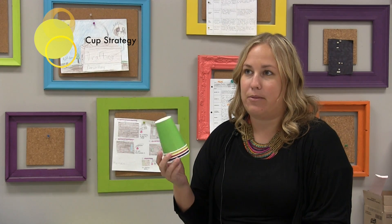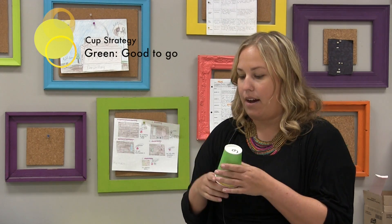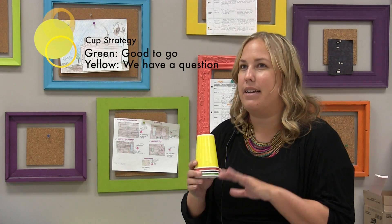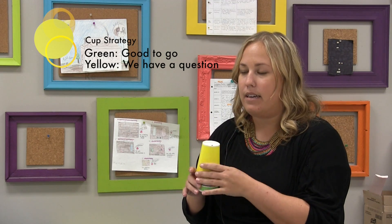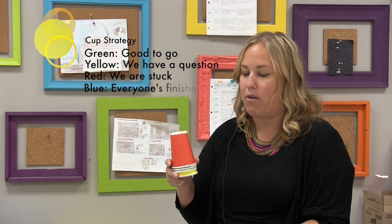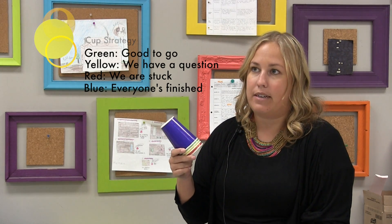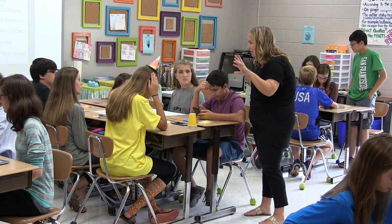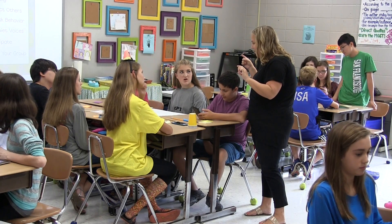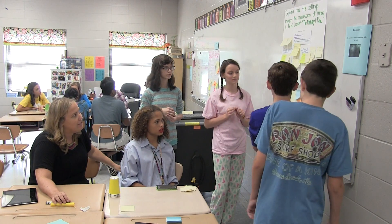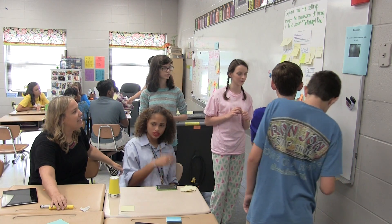When doing group work I use my cup strategy. I give students four cups — green means everyone is good to go; yellow means we have a question but it's not stopping us, so help when you can; red means we are stuck and can't move forward; blue means everyone is finished and ready for the next task. I really like using these cups for classroom management — it prevents students from just sitting with their hands raised waiting for me.